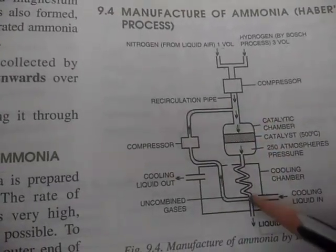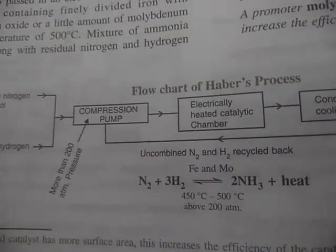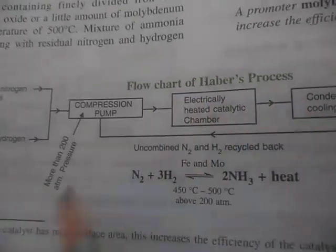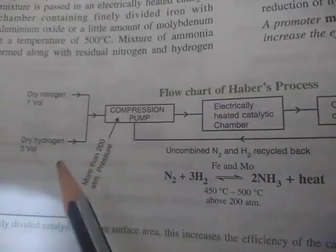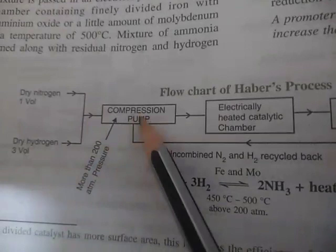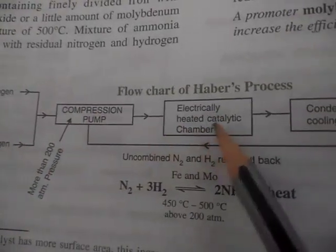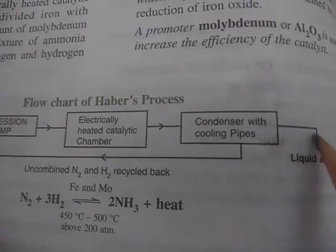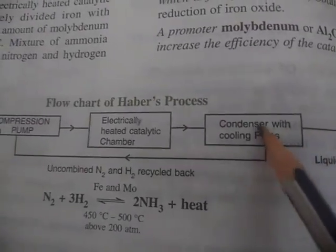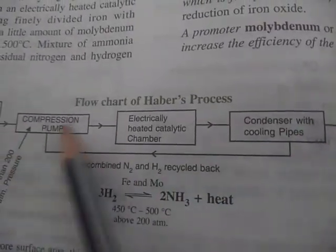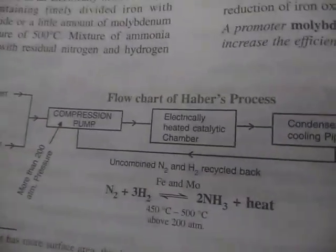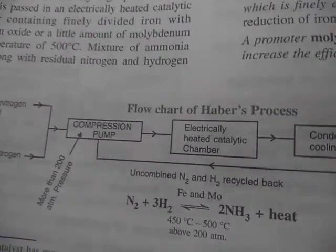On page 154, it is a flow chart of Haber's process, whatever we discussed just now. It's the same: compressor pump, then electrically heated catalytic chamber, condenser with cooling pipes, liquid ammonia is taken out. If some unreacted gas is there, it will be recycled back.